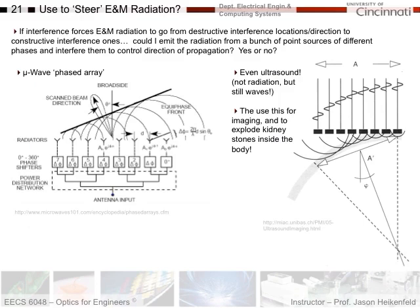What you can do with this is pretty powerful — you can actually steer electromagnetic radiation using interference principles. If you can use interference to cause radiation to go from destructive interference to locations of constructive interference, could you emit radiation from a bunch of point sources with different phases and interfere them to control the direction of propagation? The answer is yes, and this is used all the time in phased array approaches for microwaves.